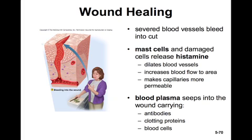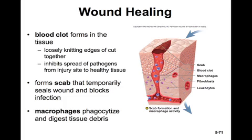In wound healing, severed blood vessels bleed into the cut. Mast cells and damaged cells release histamine, which dilates blood vessels and increases blood flow to the area, making capillaries more permeable. Blood plasma seeps into the wound, carrying antibodies, clotting proteins, and blood cells to protect the wound. Shortly, a blood clot forms in the tissue, which loosely knits the edges of the cut together and inhibits the spread of pathogens from the injury site into healthy tissue.